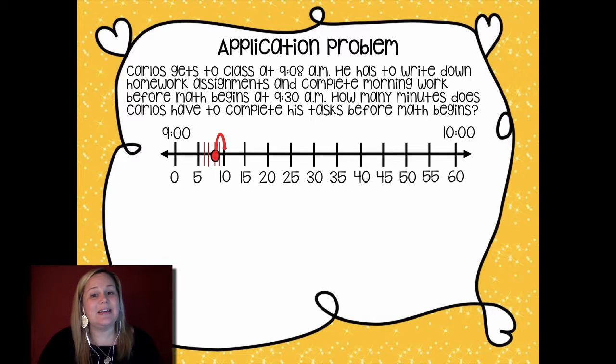Now I need to get to 9:30. I'm going to make this little jump to my 10 because it's easier to be able to count when you can get to that 10. Then we're going to jump again and again until we get to 9:30. Now we need to kind of label those jumps that we've made to figure out how long it takes him or how long he has to complete those things. How long does it take him to do his homework assignments, write them down, and complete his morning work?